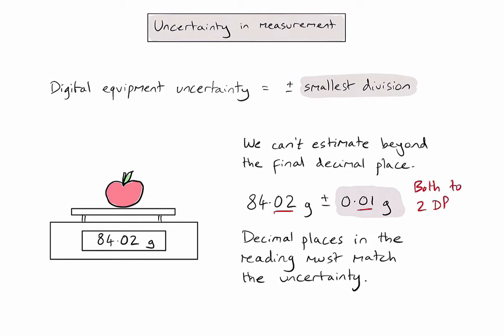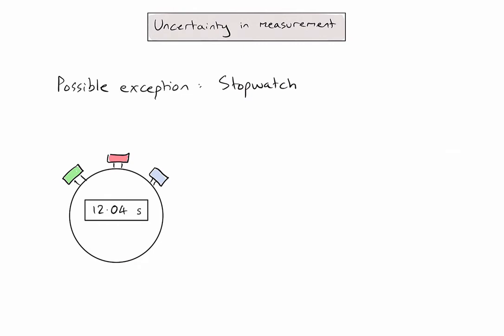Now there is one exception to this convention, and that's using a stopwatch. So applying my normal convention for digital equipment, I would write down my measurement, which is 12.04, and I would follow it by writing the uncertainty of plus or minus the smallest measurement I can make, or the smallest division, which is 0.01.